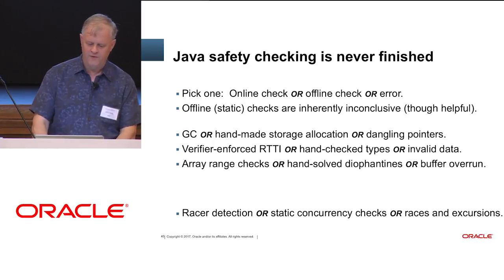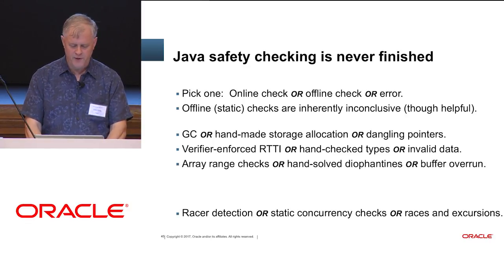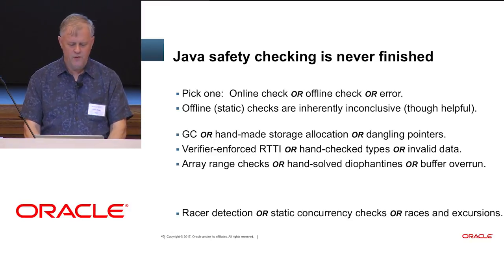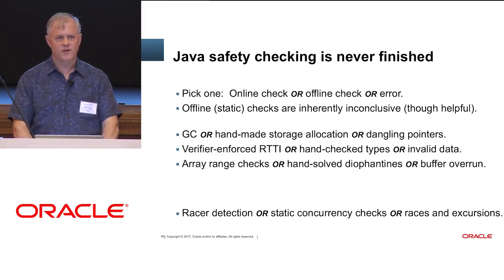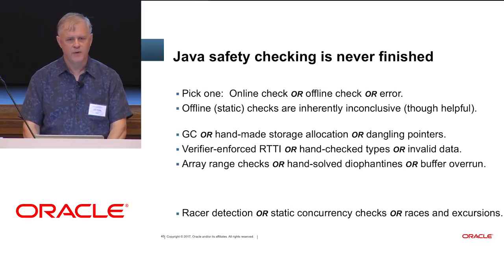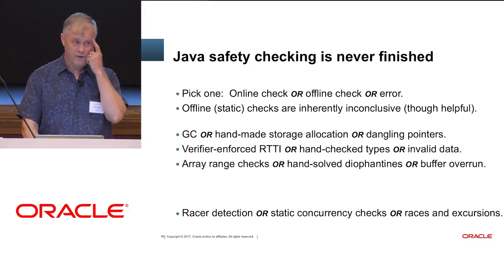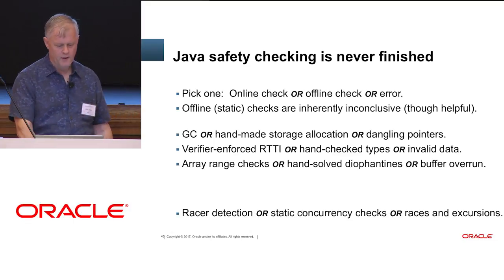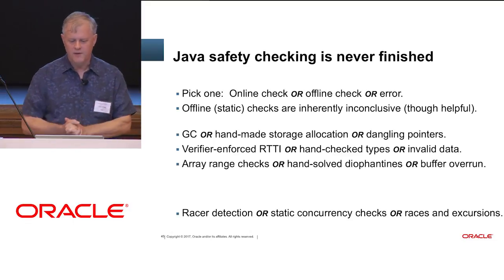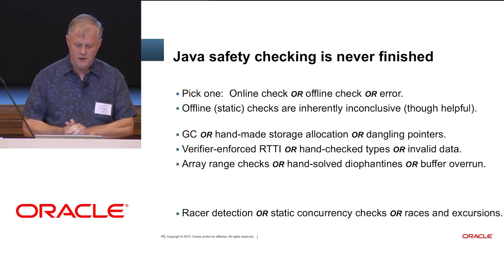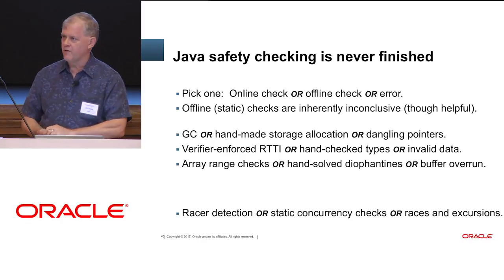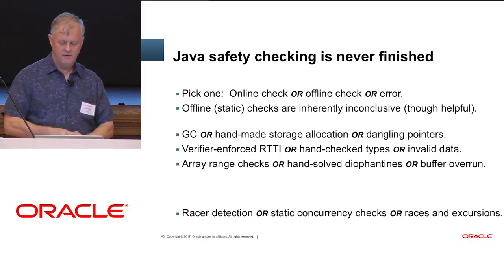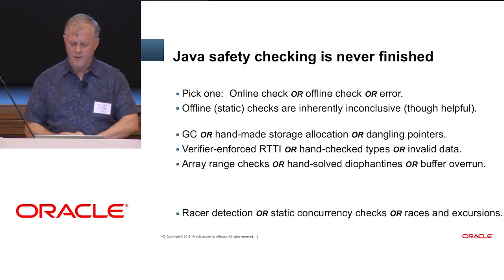You can have a verifier-enforced runtime type information, or you can hand-check it and it's going to fail. You can have array range checks, or you can hand-solve the Diophantine equations ahead of time — and Matiyasevich proved that's Turing-complete too, so you're going to get a buffer overrun once in a while. Likewise, the new thing I'm proposing is you can have online race detection, or you can do static concurrency checking and eyeballing of code — and when that fails, you'll get races and various kinds of excursions in behavior.